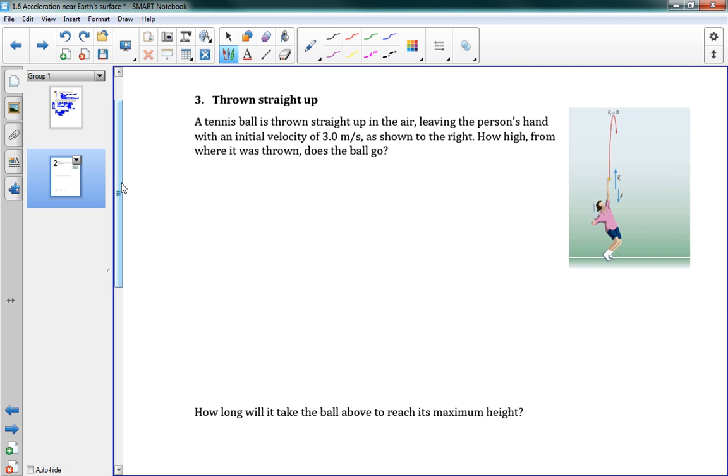So that was a whole half of the lesson already. The second half now is similar, but now we're talking about problems where we throw something straight up. And you can see that it's going to look pretty similar. So here we have a tennis ball. It's thrown straight up in the air, leaving the person's hand with an initial velocity of 3.0 meters per second.